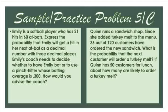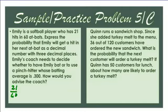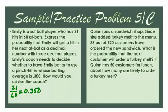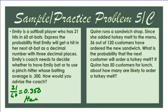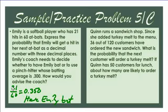Emily is a softball player who has 21 hits in 60 at-bats. What is the probability she will get a hit in her next at-bat, as a decimal to three decimal places? 21 divided by 60 gives 0.350 — so she's batting .350. The coach needs to choose between Emily and a pinch hitter batting .300. Emily should bat because she has the higher batting average: .350 versus .300.